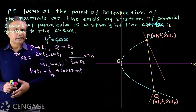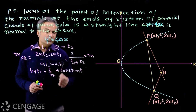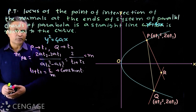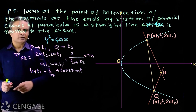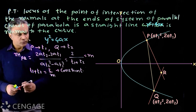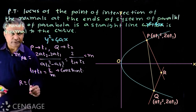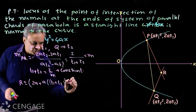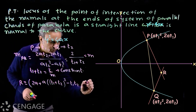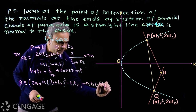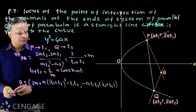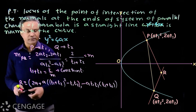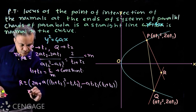Now we draw normals to the parabola at points P and Q which intersect at point R. We have to get the equation of the locus of variable point R. Point R is variable because points P and Q are variable. The standard coordinates of point R are: x = 2a + a[(t1+t2)² − t1t2], y = −a·t1·t2·(t1+t2). Now in these coordinates t1+t2 is constant with value 2/m, so we put this value in.